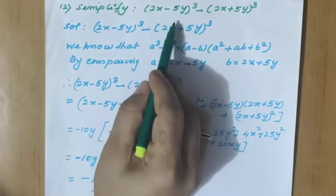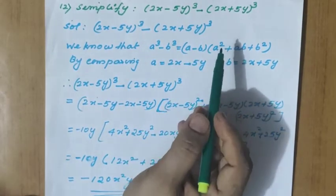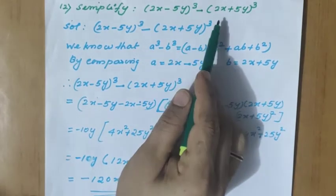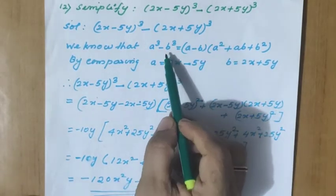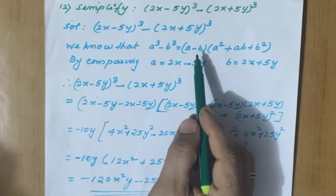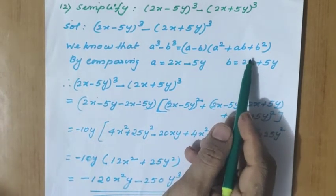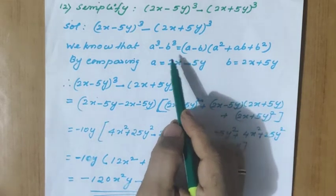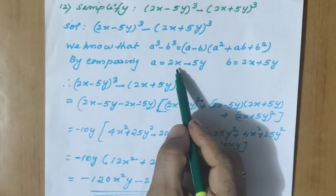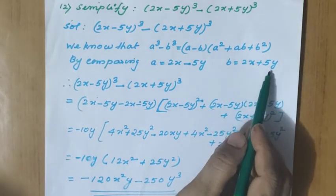Simplify 2x minus 5y whole cube minus 2x plus 5y whole cube. So here it is in the form a cube minus b cube. The formula is a cube minus b cube equals a minus b into a square plus ab plus b square. So what is in place of a? In place of a we have 2x minus 5y and b is 2x plus 5y.